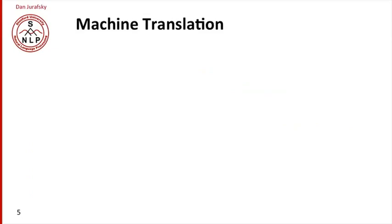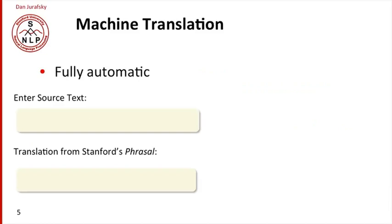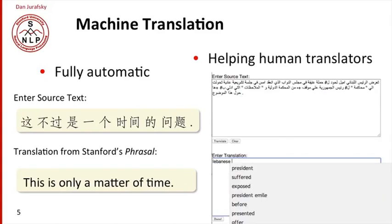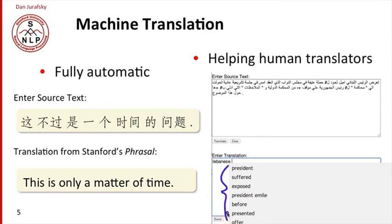Machine translation is another important new application. Machine translation can be fully automatic — for example, we might have a source sentence in Chinese, and here's Stanford's phrasal MT system translating that into English. But MT can also be used to help human translators. So here, we might have an Arabic text, and the human translator might need some help from the MT system — for example, a collection of possible next words that the MT system can build automatically.